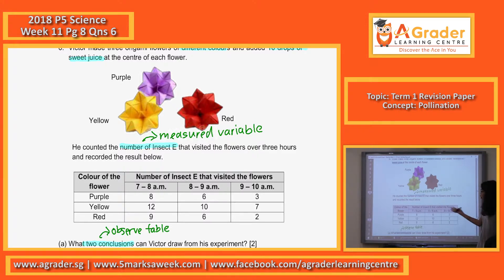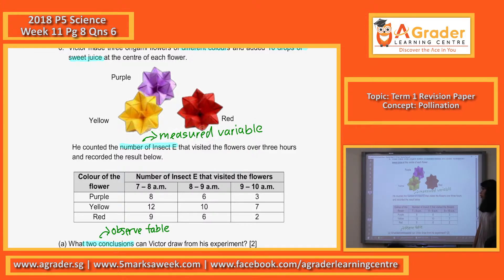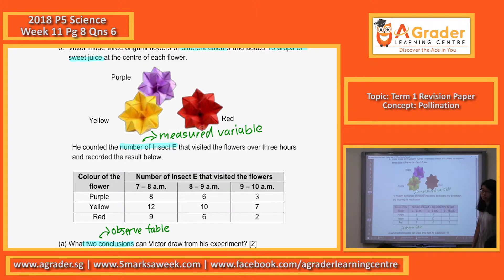Conclusion is — what did he find out? What did he notice? What did he see? When they say conclusions, you must answer specifically. The insects get attracted to the yellow flowers the most and the red flowers the least.